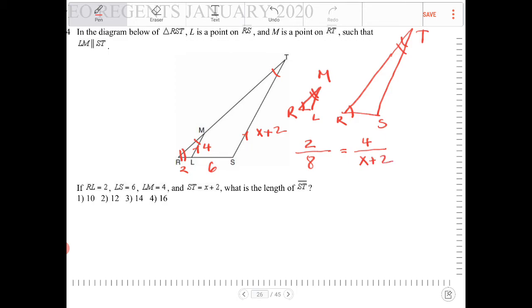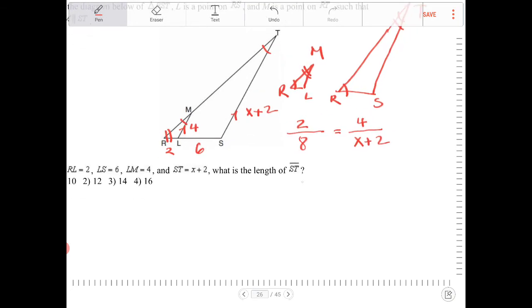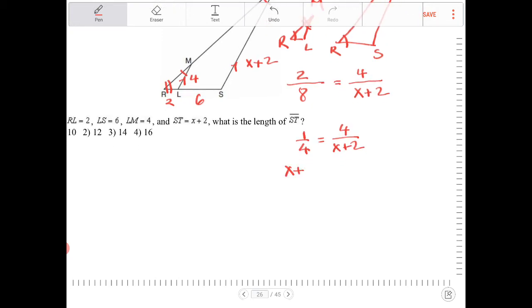I can now solve for X, and then after I solve for X, I can then figure out what ST is. 2 over 8, that's 1 fourth, is equal to 4 over X plus 2. Cross multiply, I end up with X plus 2, is equal to 16. Subtract 2 from both sides, I end up with X is equal to 14.